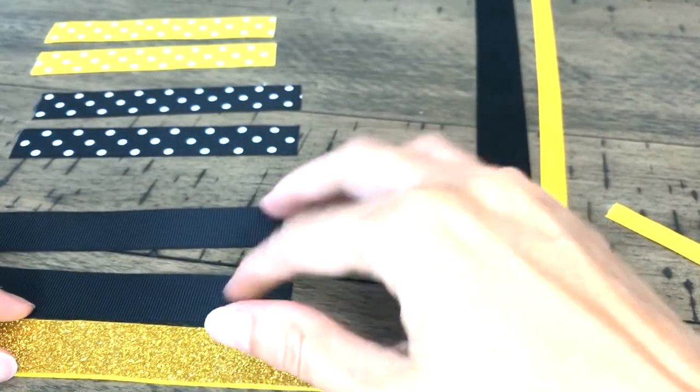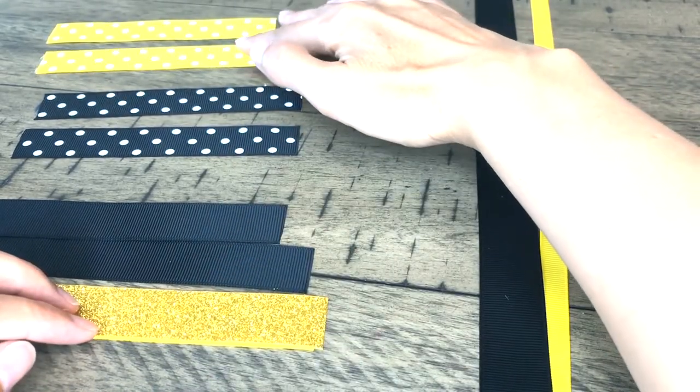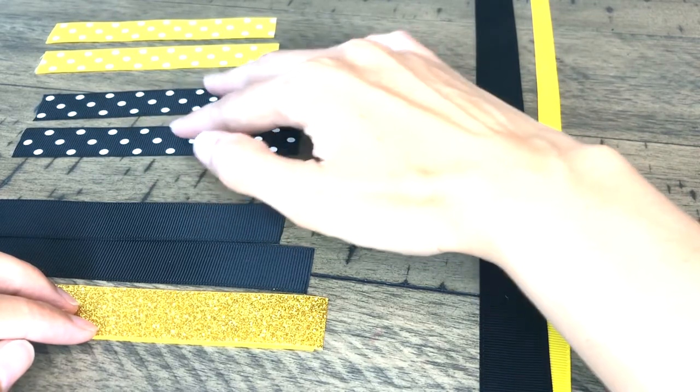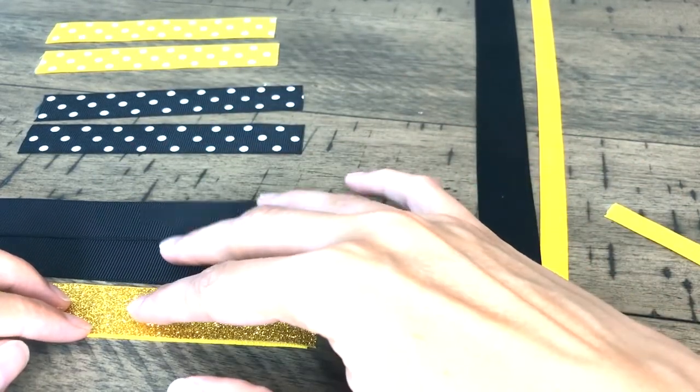But typically, if you're making a boutique bow without a sparkly piece, you would have two five-inch pieces in a different color, two five-inch pieces, and in a different color, three five-inch pieces.